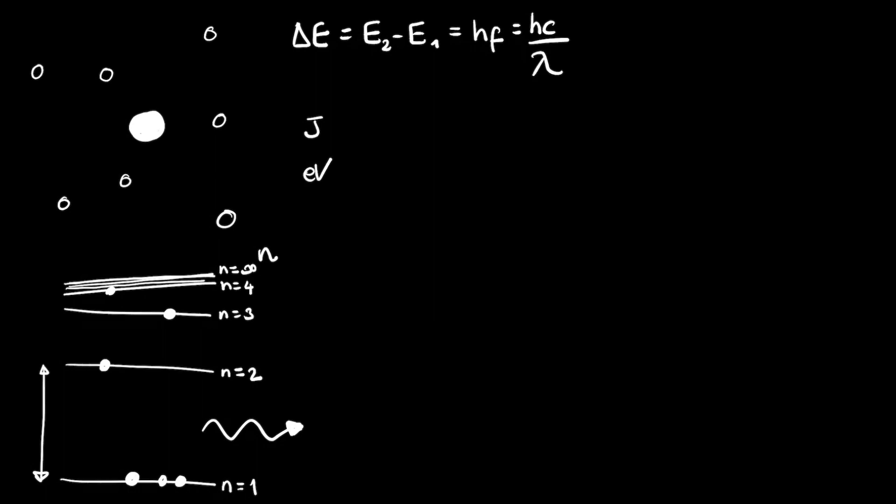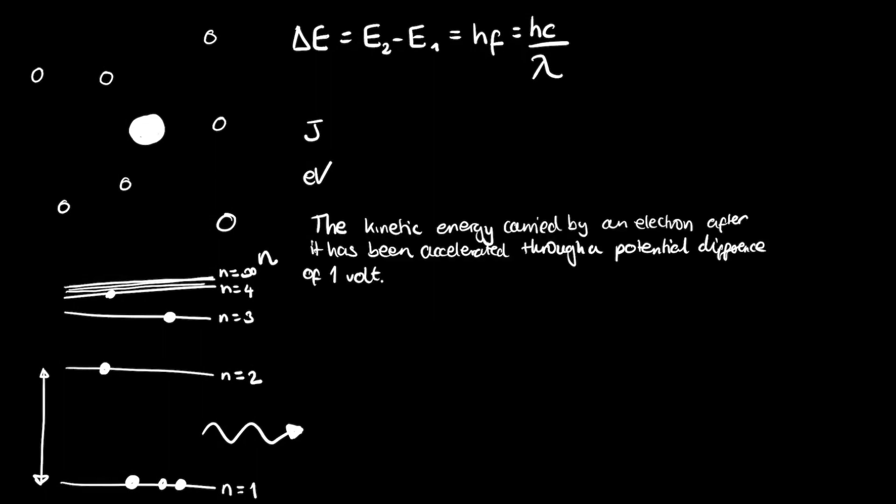Now the definition of an electron volt, it's the kinetic energy carried by an electron after it has been accelerated through a potential difference of one volt. And the key thing about electron volts is that it's a measure of energy. It's not a measure of voltage, it's not a measure of charge, it's a measure of energy.